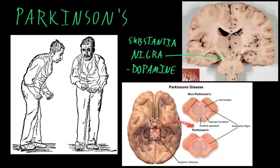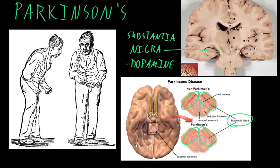This illustration shows the same thing, but here we're looking up at the brain from underneath, and they've cut the brain stem at the level of the substantia nigra. In a person without Parkinson's disease, we usually see this dark area — the substantia nigra — very well on both sides. But in a person with Parkinson's disease, since those pigmented dopaminergic neurons have been lost, we often see less or none of that darkness that we normally see in the substantia nigra.